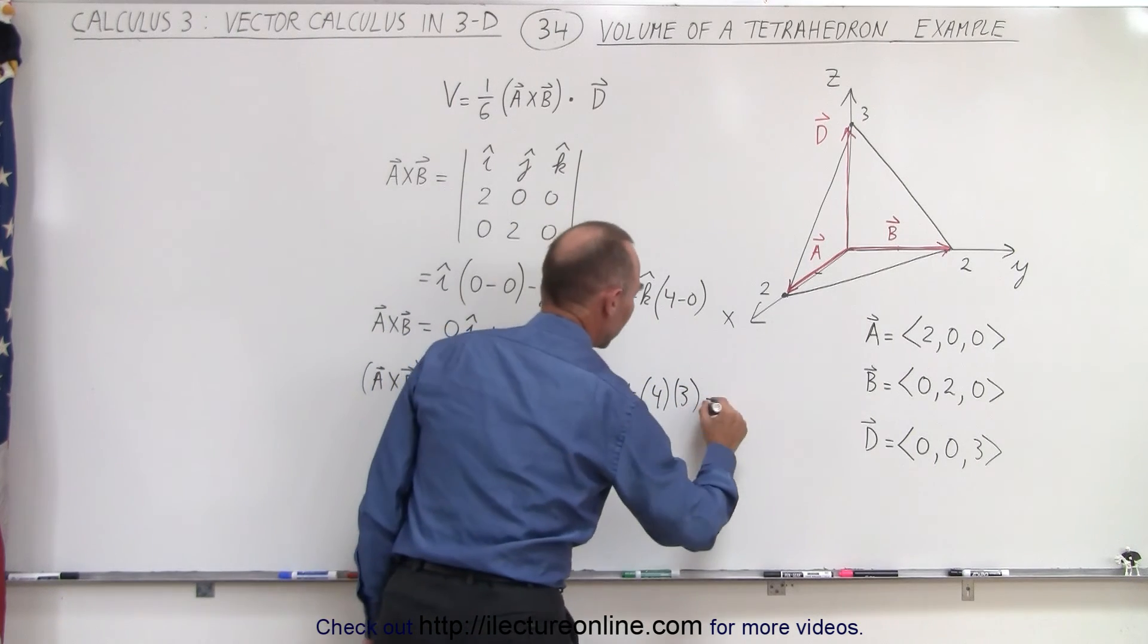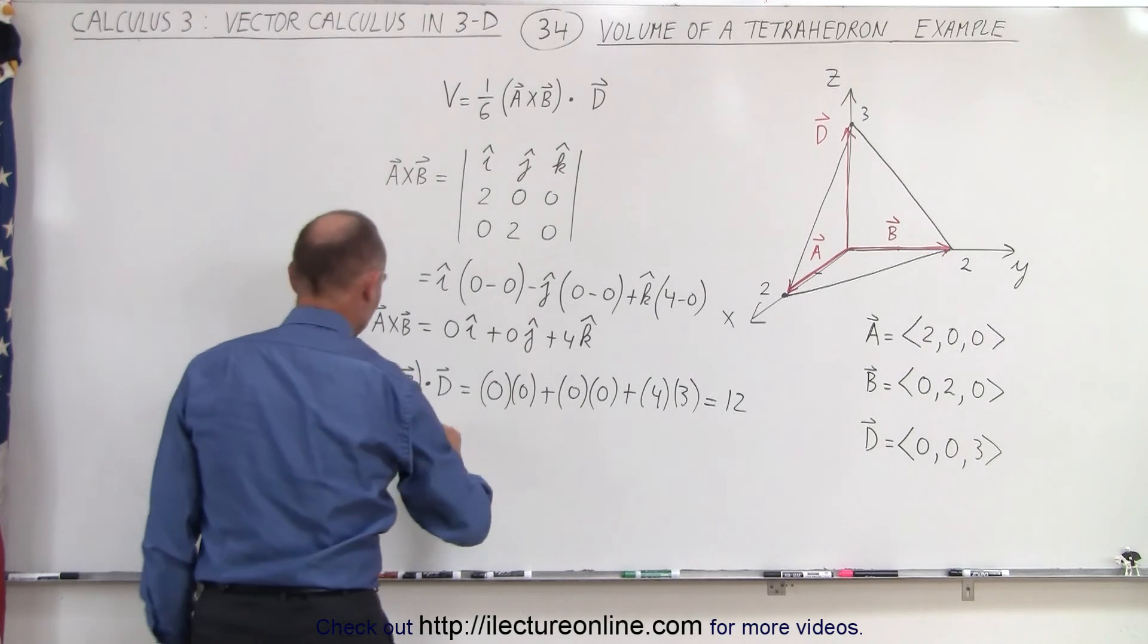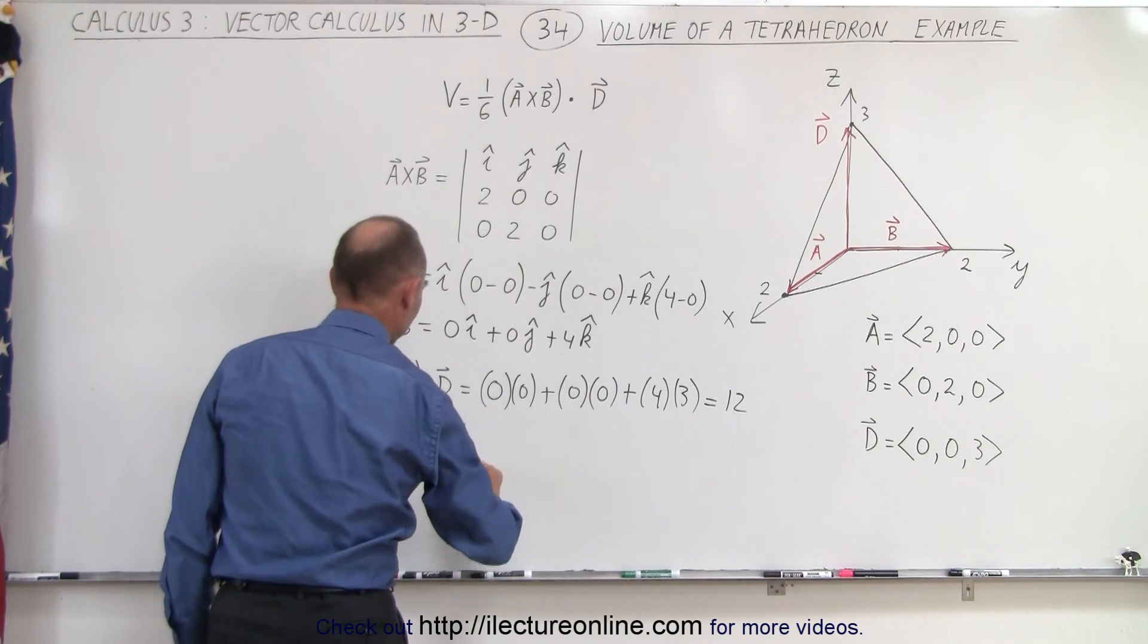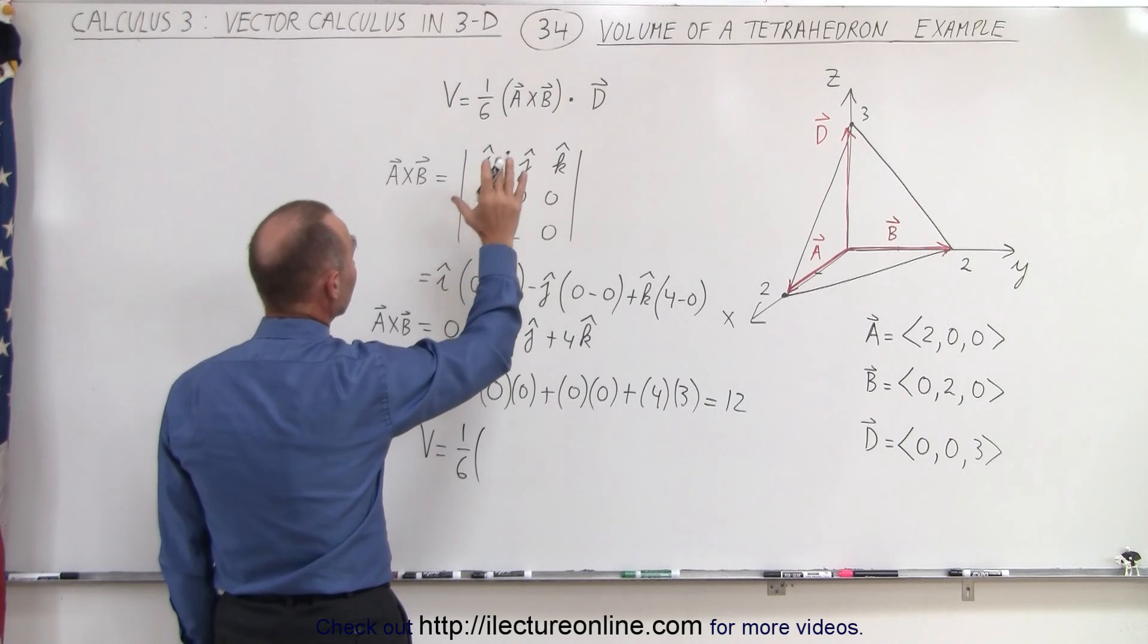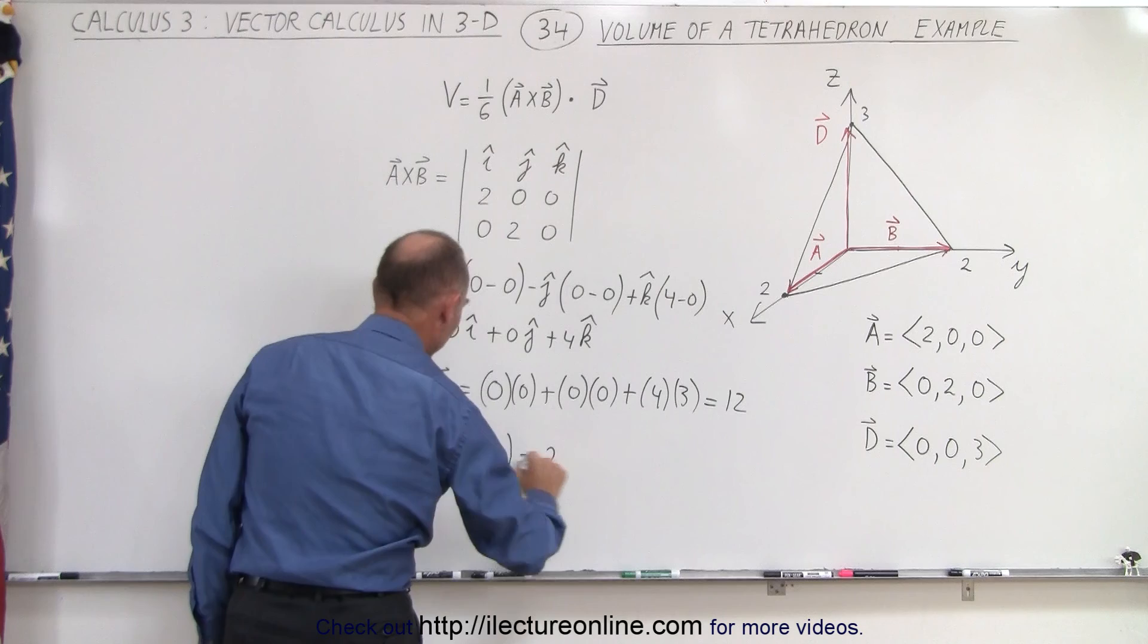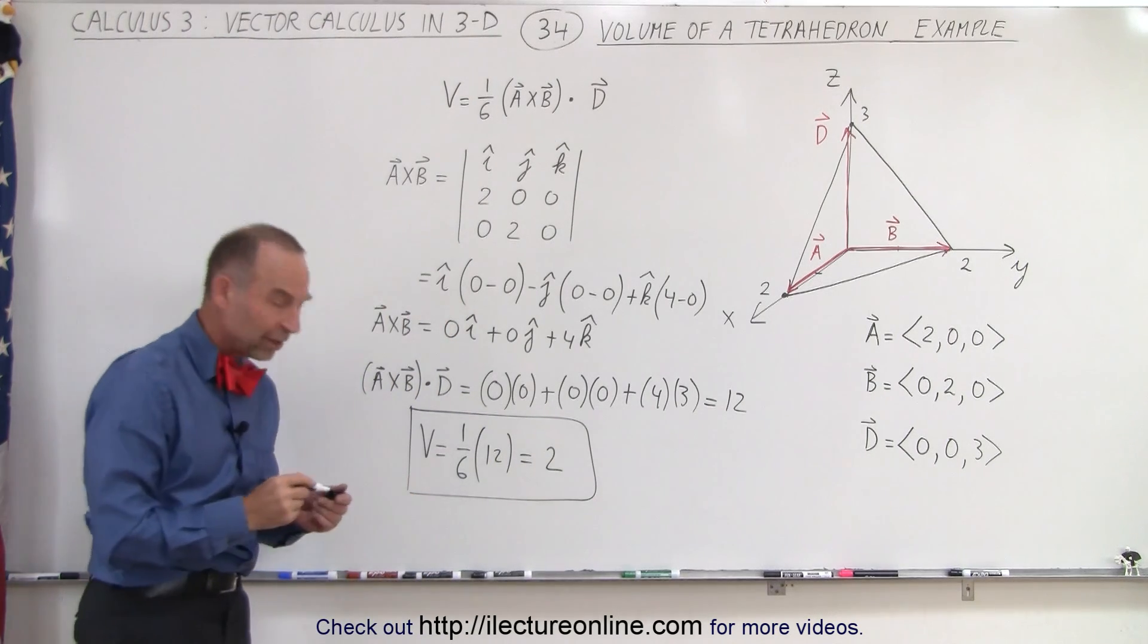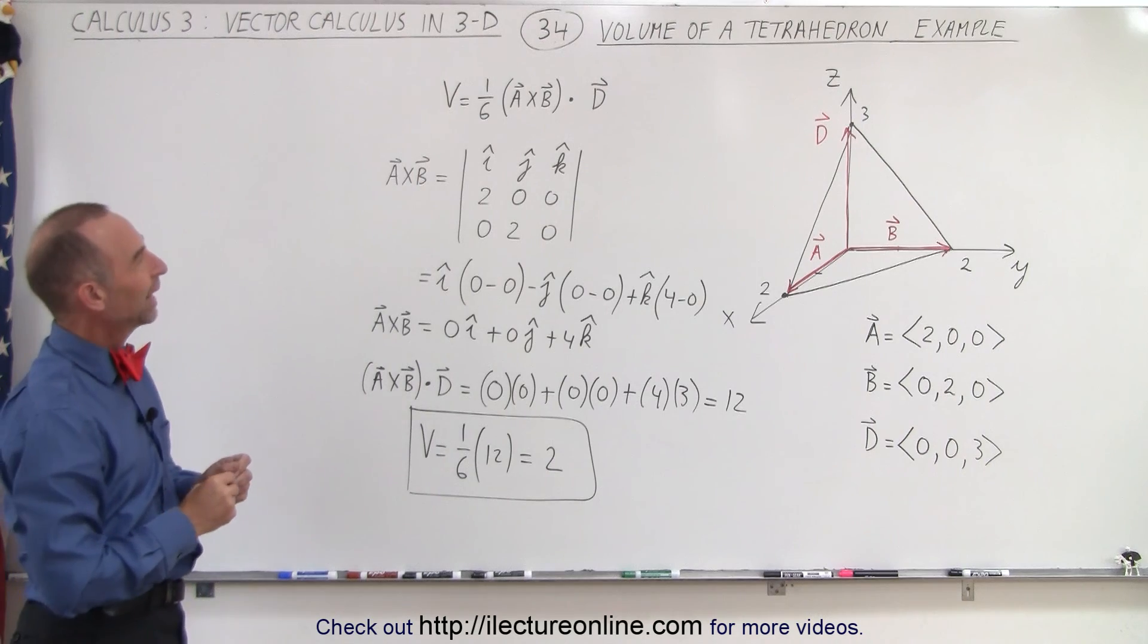Finally, to get the volume, the volume equals 1/6 times A cross B dotted with D, which is 12. And that gives us the value of 2. The volume of that tetrahedron is equal to 2. And that's how it's done.